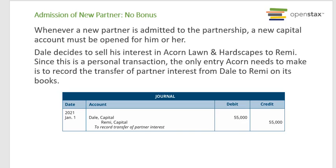Admission of a new partner with no bonus. Whenever a new partner is admitted to the partnership, a new capital account must be created for him or her. So Dale decides to sell his interest in Acorn Lawn and Hardscapes to Remy. Since this is a personal transaction, the only entry Acorn needs to make is to record the transfer of partnership interest from Dale to Remy on its books.